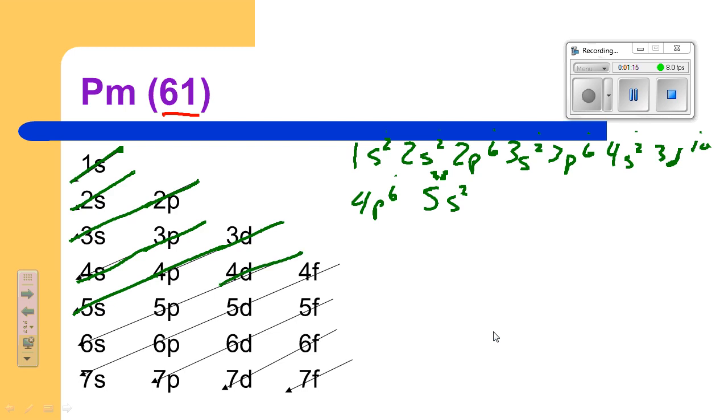And then I'm going to go through 4d, 10 of them is going to take me to 48, 5p, 6, 54, and then 6s, 2.